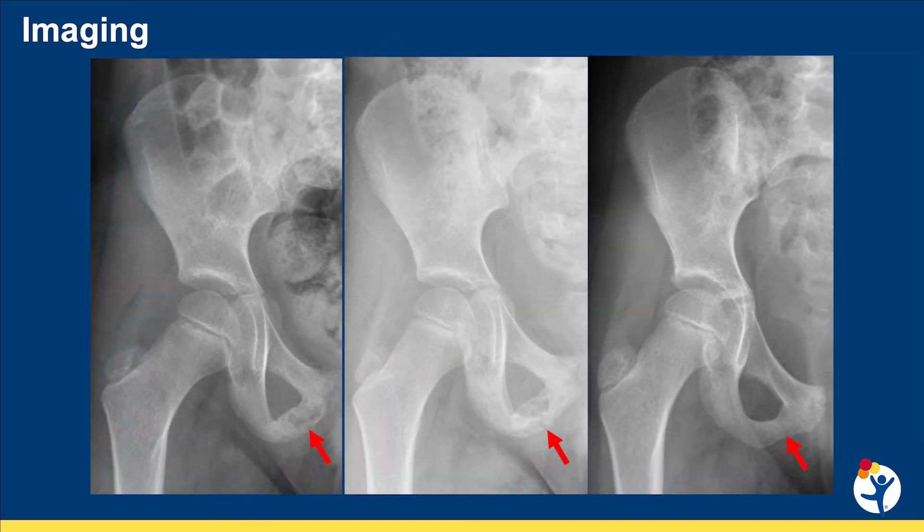Often we'll see different radiographic findings depending on where the CRMO is located. Most often you'll see lucencies, as is seen in this ischial tuberosity. With treatment, you can see the bones reconstitute and return to a more normal appearance, which you can see on the right side of the screen.